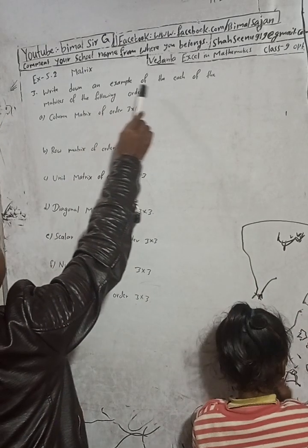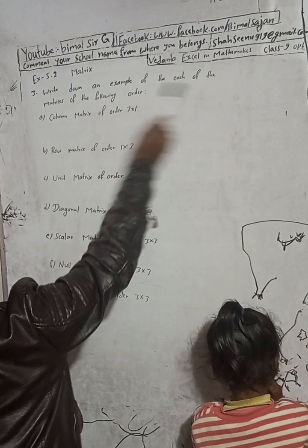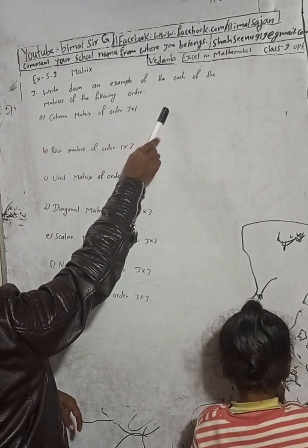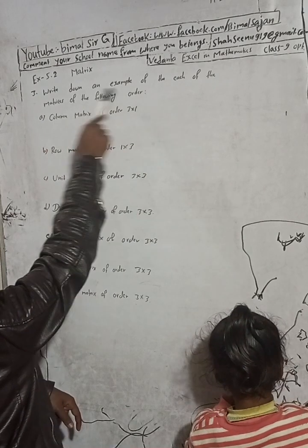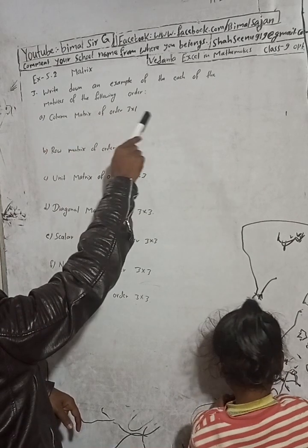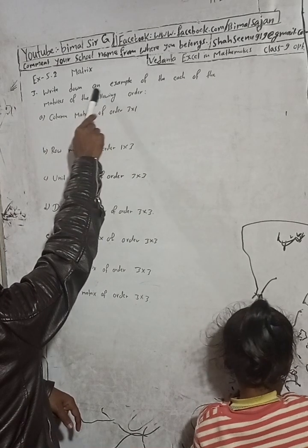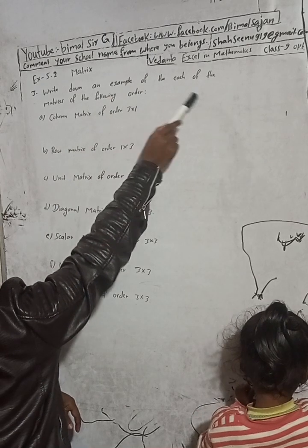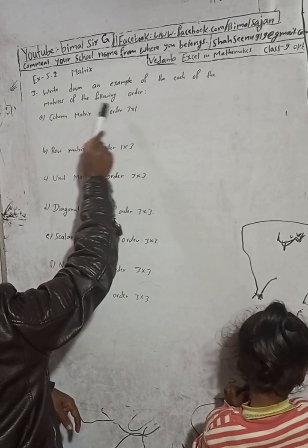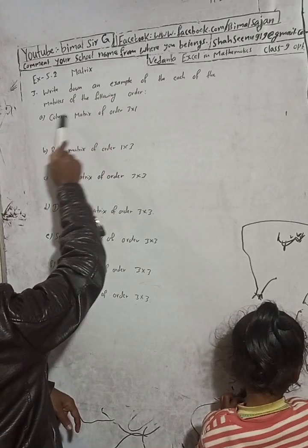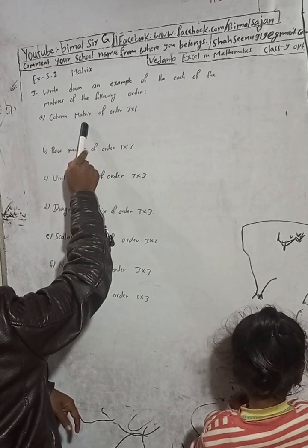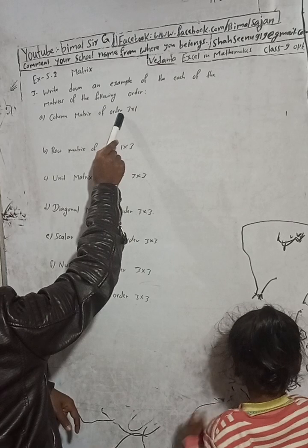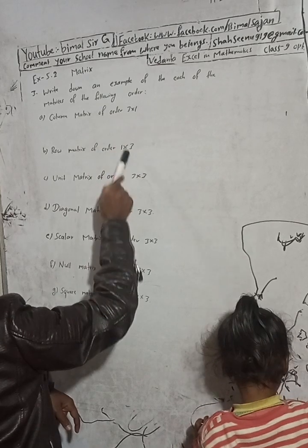Write down an example of each of the matrices of the following order. We have to write an example of each of the matrices for the given order: 3 into 1, 1 into 3.